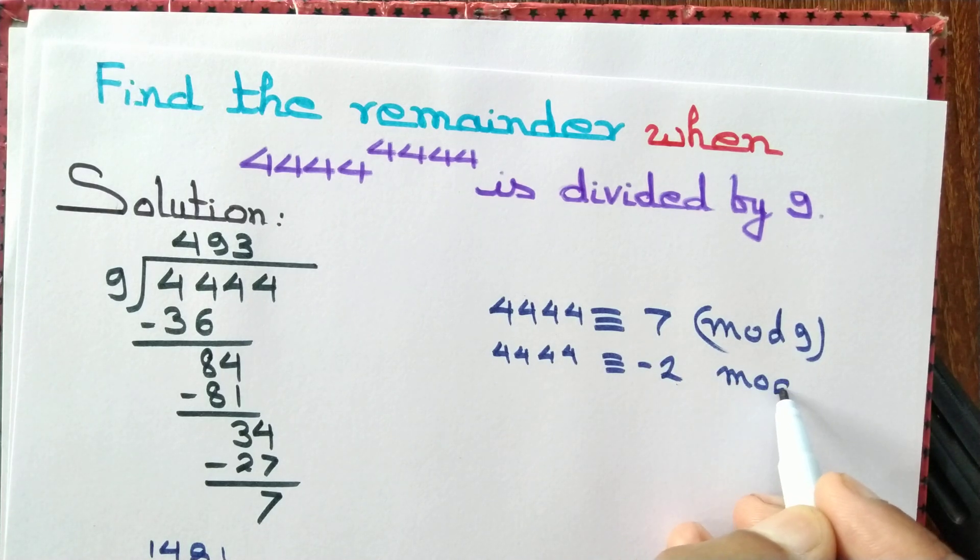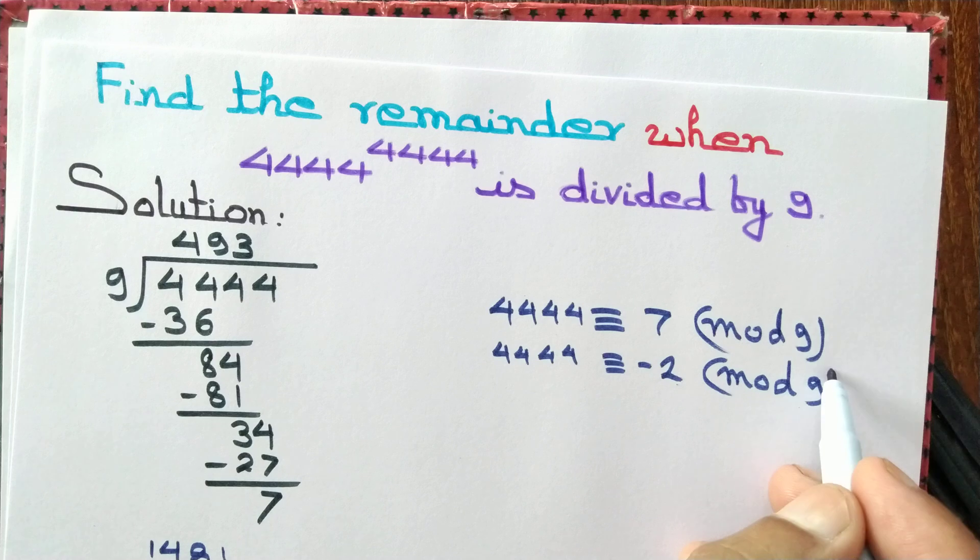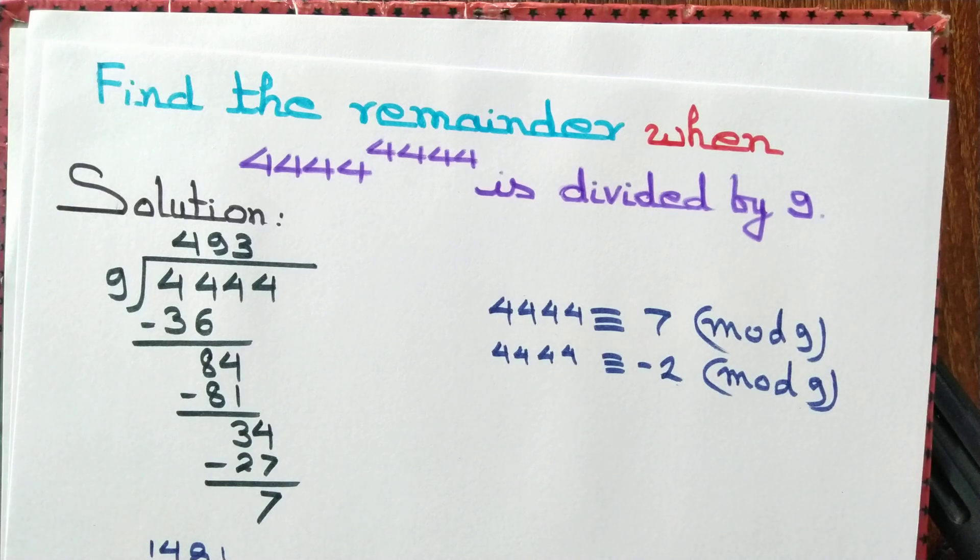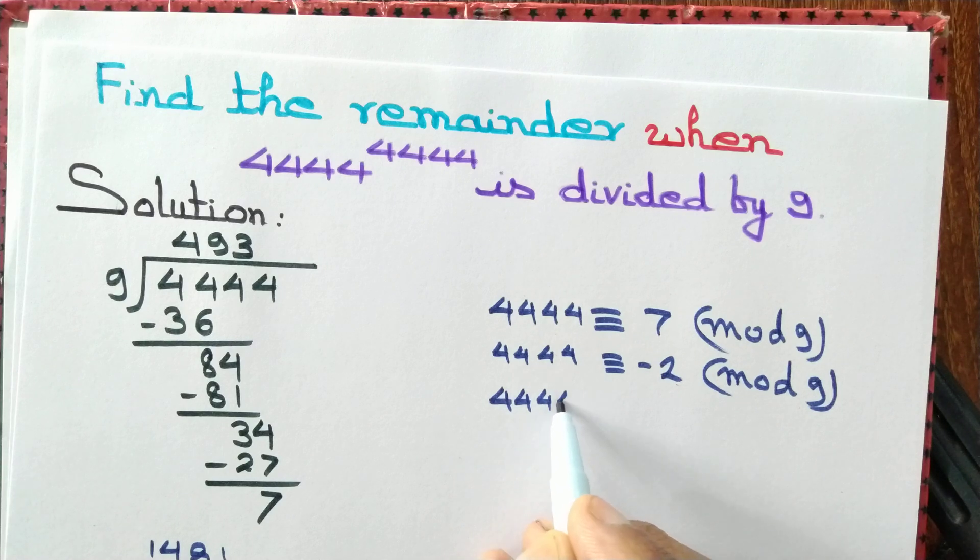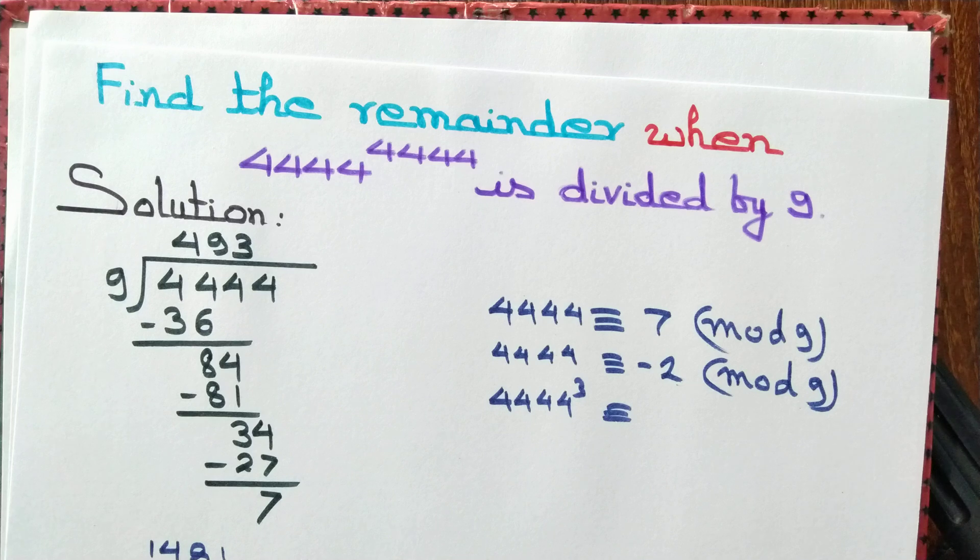And minus 2 is a smaller number, though negative, it will be easier for us to handle. Let's raise it to the power 3 to show that 4444 to the power 3 is congruent to minus 8, and minus 8 is 1 mod 9.